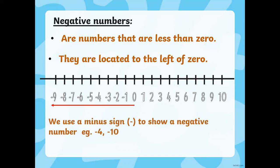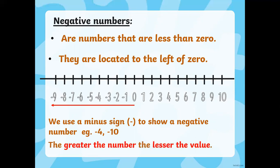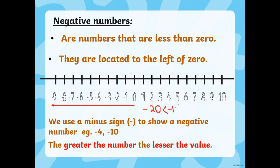We use a minus sign to show that a number is negative, like minus 4 and minus 10. If the number is negative, we must write the minus sign with it — just like with positive numbers we sometimes don't write the plus sign and still assume it's positive, but with negative numbers we must write the minus sign. And the greater the number, the lesser the value. For example, minus 10 has less value than minus 4. If my number is minus 20, that would be less than minus 10, and minus 10 would be less than minus 2. Basically, as the number gets bigger with the negative sign, its value becomes less.